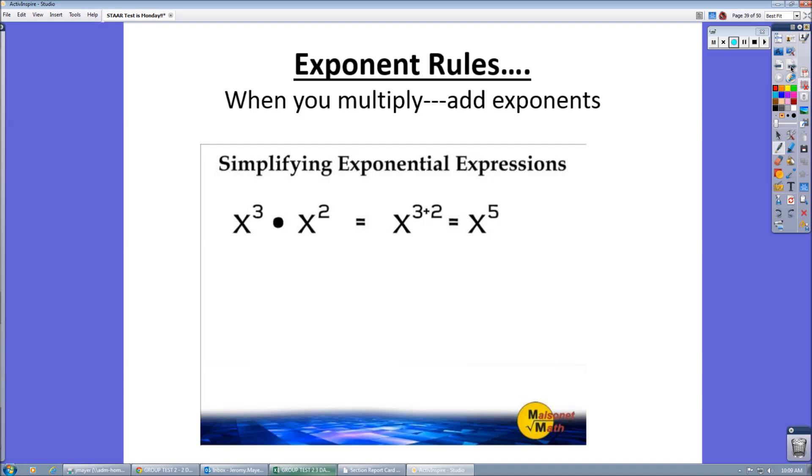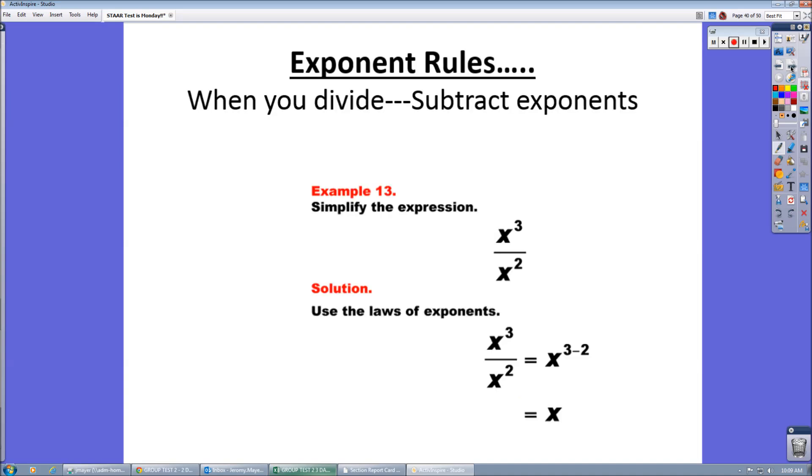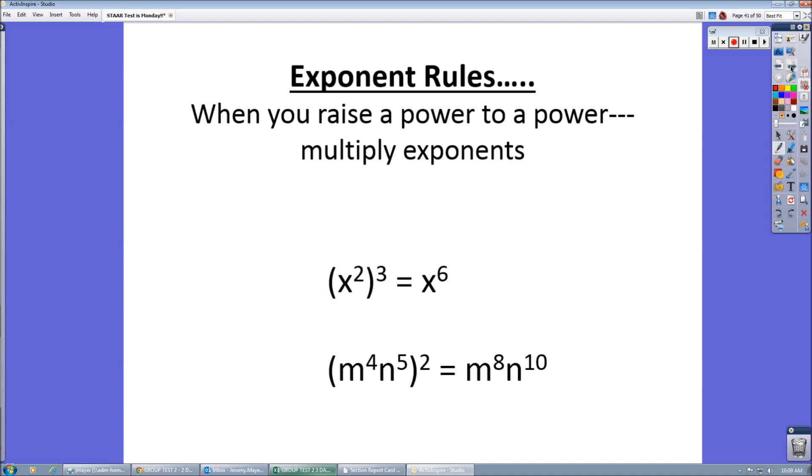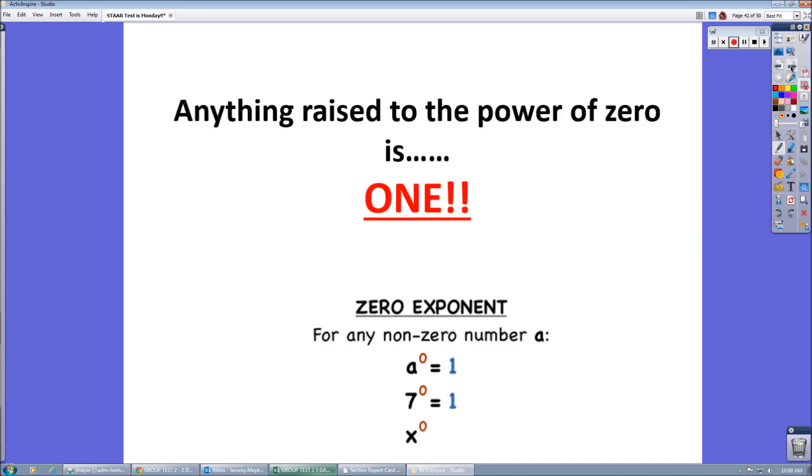Multiplying exponents that have the same base, just add the exponents. When you're dividing with exponents that have the same base, you just subtract the exponents. Exponent next to an exponent, or a power to a power, you just multiply the exponents. Any non-zero number raised to the power of zero is always one.